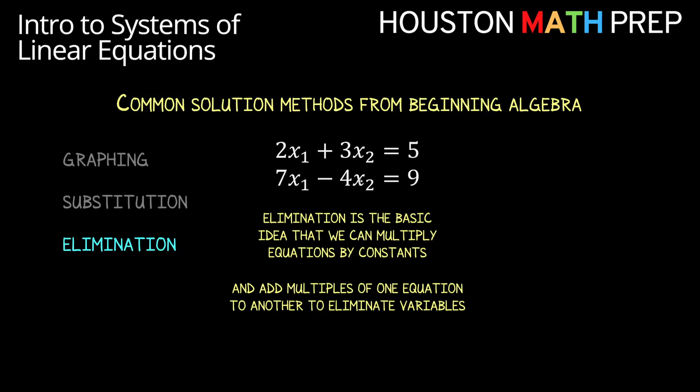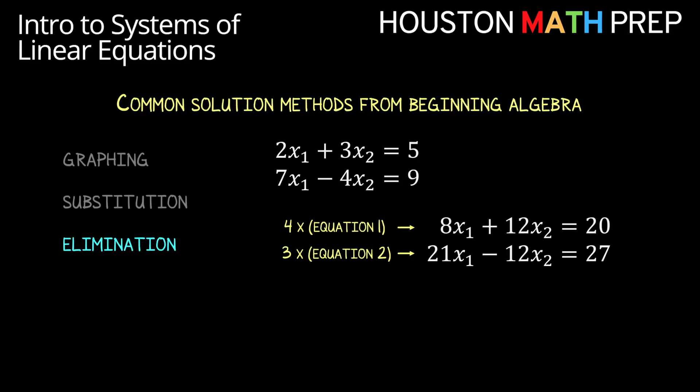In beginning algebra we might have looked at this system here, perhaps at the x2 terms, and notice that the coefficients have a common multiple of 12. So if we could try to produce a positive 12x2 term in one equation and a negative 12x2 term in the other equation, then when we add those equations together we'll no longer have x2 to deal with and it makes it much easier for us to solve the other variable x1.